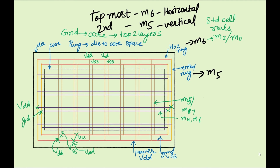For example, if the standard cell rail is in M2, you will have M2 VDD and M2 VSS, with M2 being horizontal. The standard cell will sit and connect power from these two rails. From there, a via ladder connects through M3, M4, M5, and M6 — all the way from M2 up to the topmost layers where the power mesh or power grid is created. That is the complete structure of the power mesh or power grid in the core.